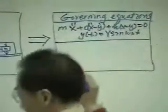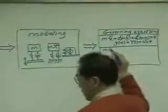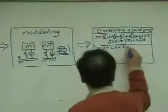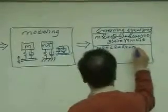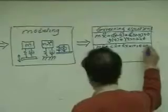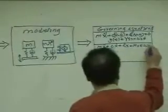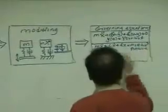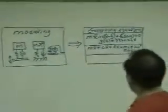And then, for unbalanced mass case, the governing equation derived was mx double dot plus c x dot plus k x equal to m0 e omega r square sine omega r t.